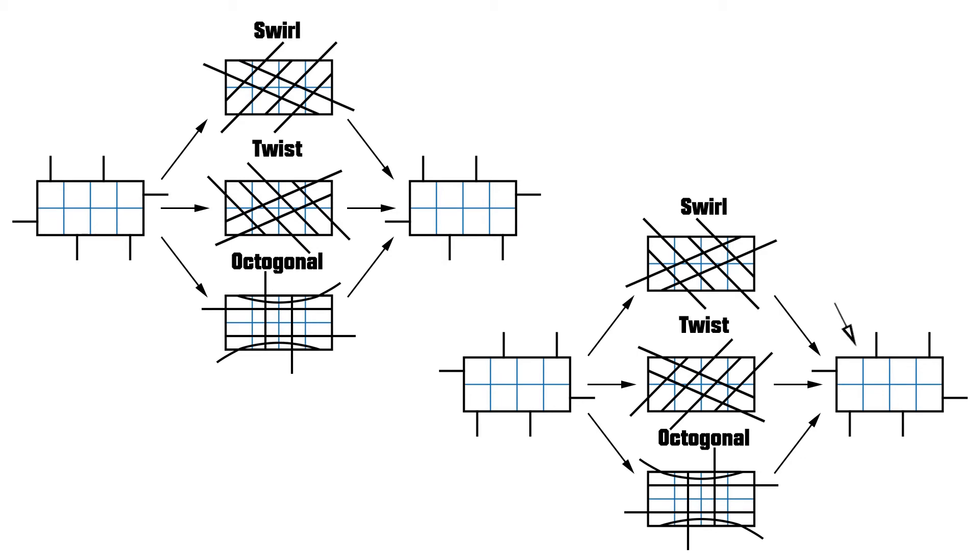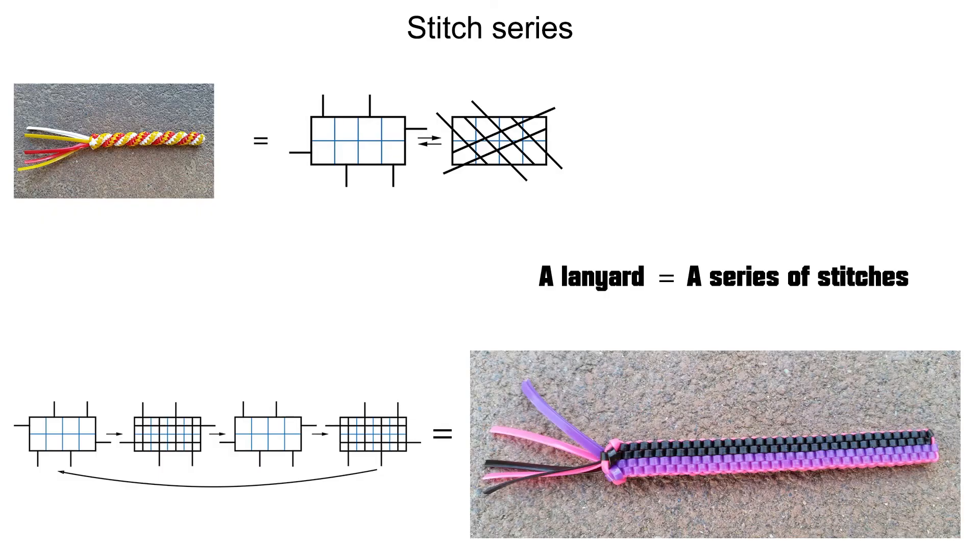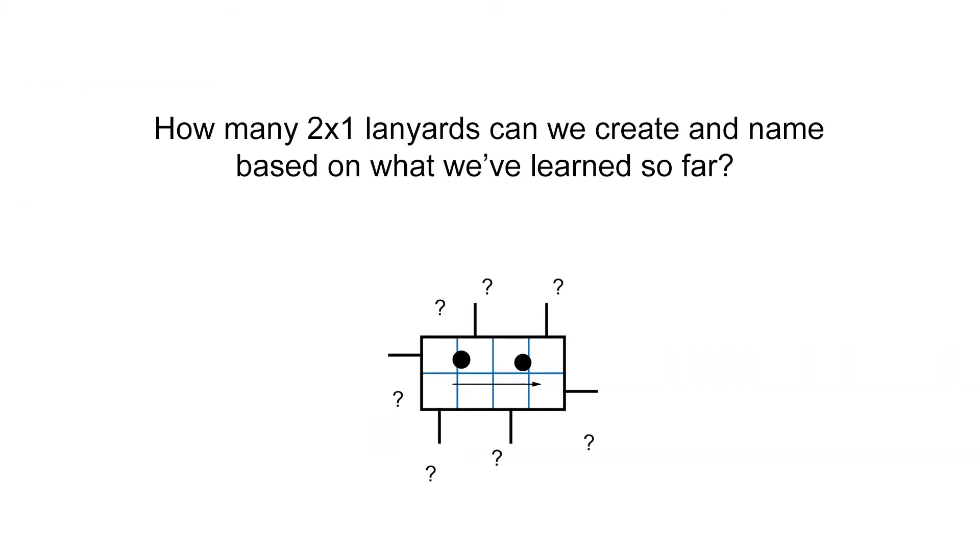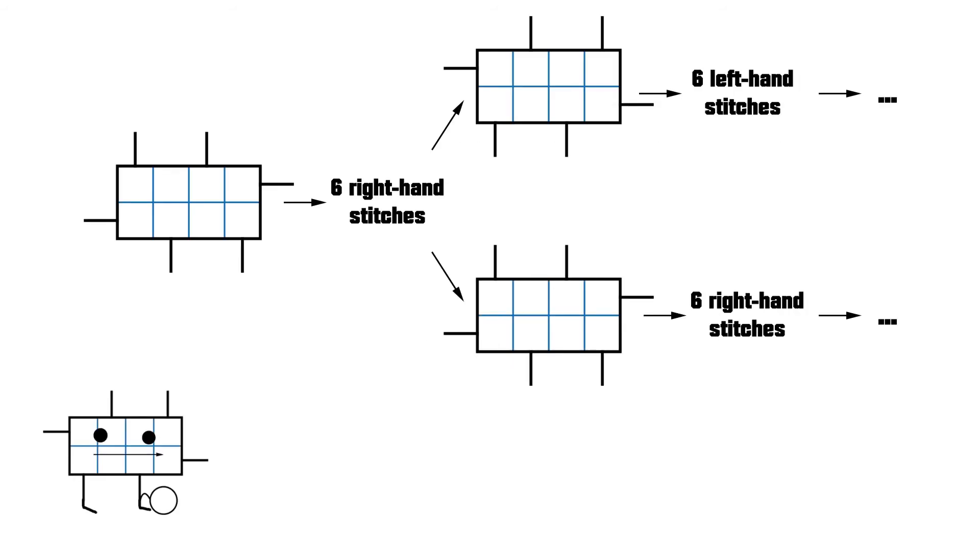Coming back to the topic of stitch series, how can we name them? In other words, how many 2x1 lanyards can we create and name based on what we learned so far? Every position we start with has six possible stitches that we can continue with. Because of that, there are an infinite number of sequences of stitches.